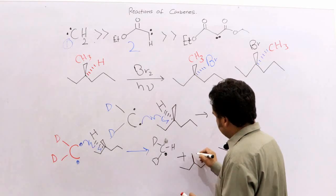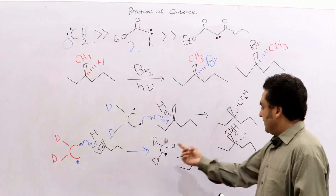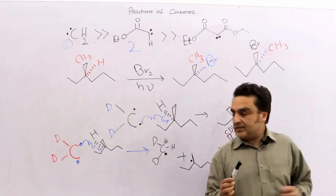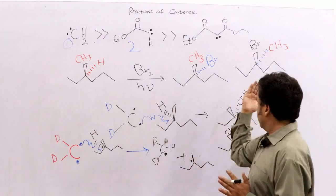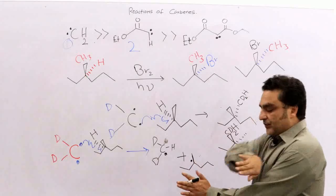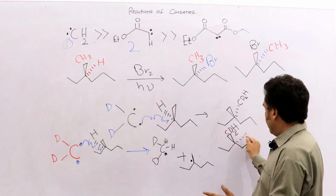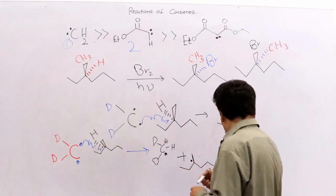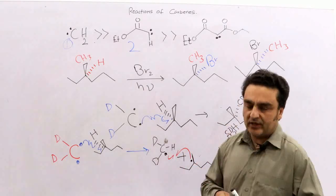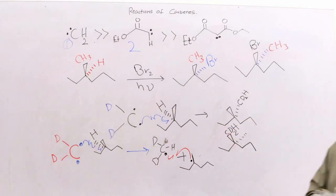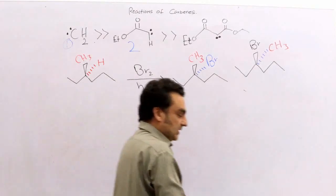Now this carbon becomes planar — a radical intermediate. The carbene fragment can then join this molecule from the back side or the front side. When the carbene comes from the back side, the methyl group ends up on one side and the CD2 fragment attaches from behind. When it comes from the front side, the CD2 will be toward you. So two stereo products are formed from this triplet carbene reaction, just as with the bromine radical.